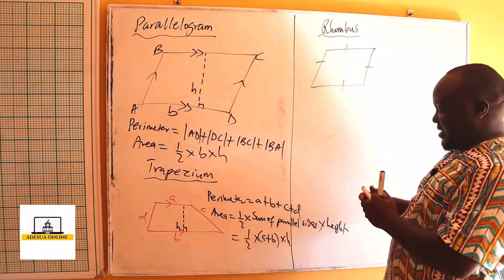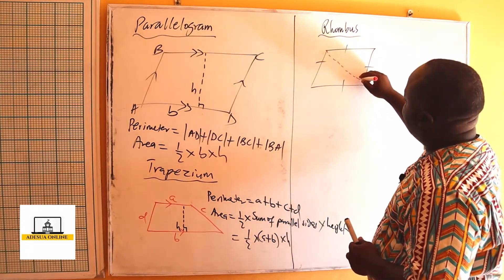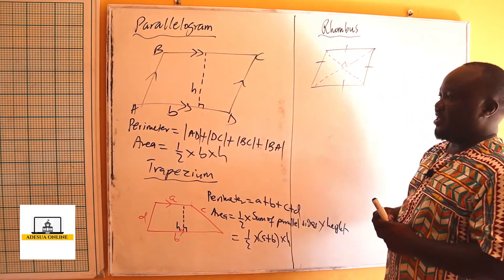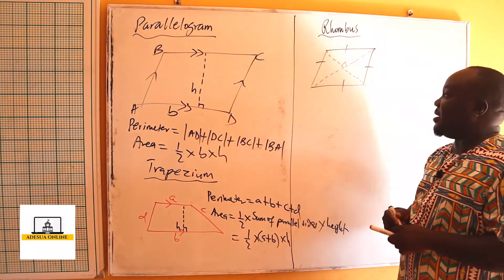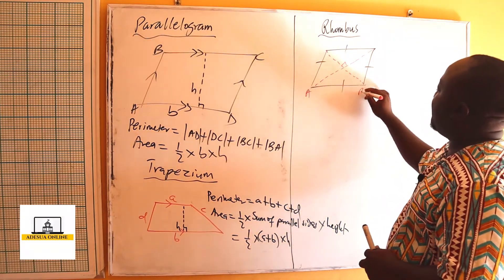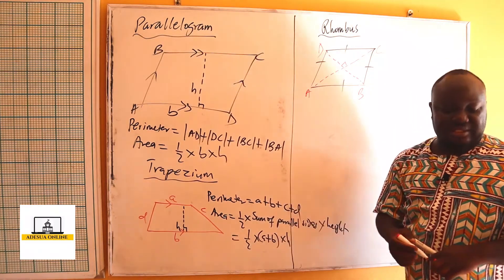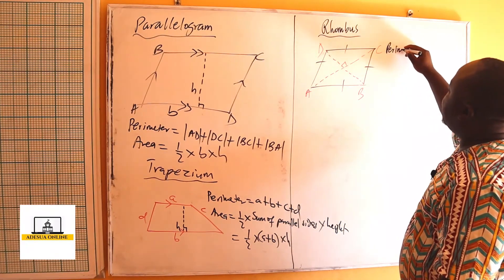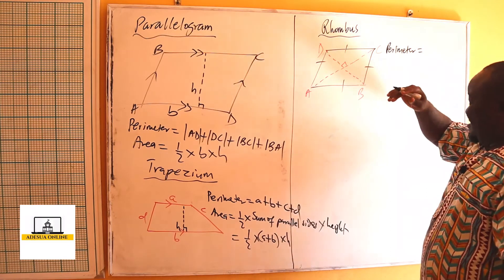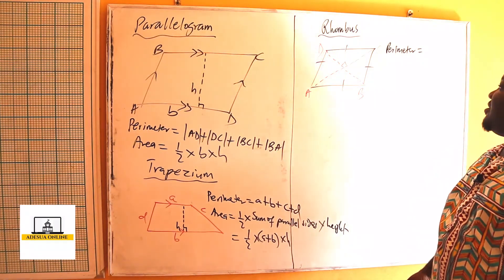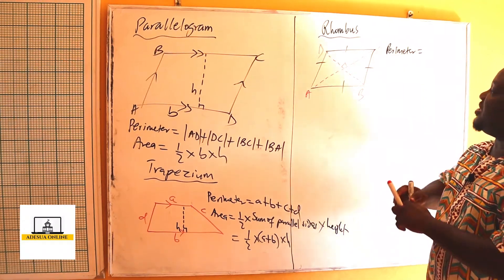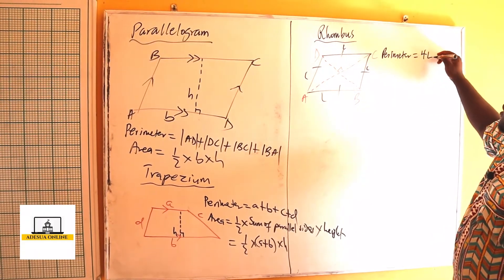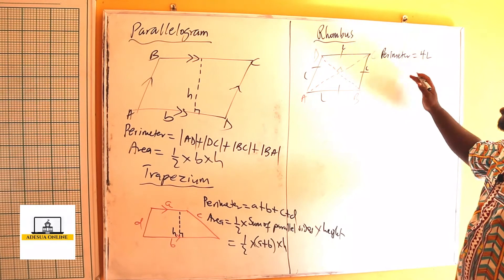If I bisect the rhombus, the diagonals meet at 90 degrees. So for a rhombus ABCD, the perimeter — since it is a four-sided figure with all four sides equal — if each side has length L, the perimeter will be equal to 4L, which is L plus L plus L plus L.